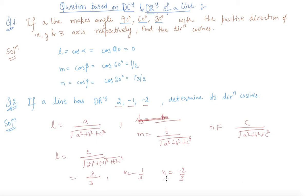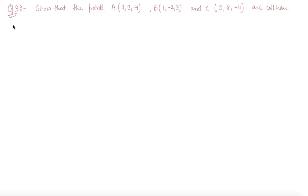Now let us discuss a typical question on direction cosines and direction ratios. Here is question number 3. We need to show that the points A, B and C are collinear.